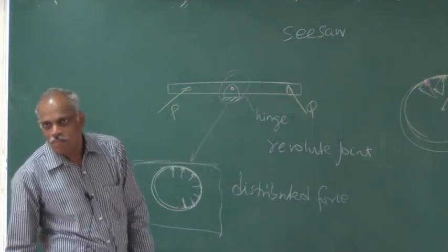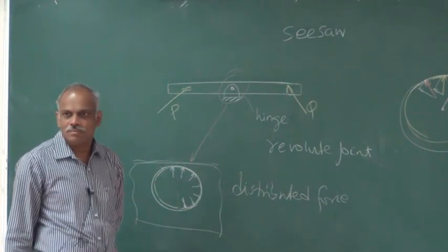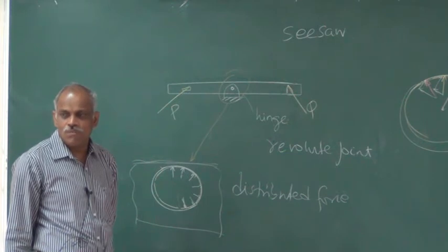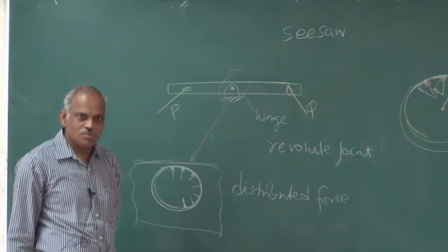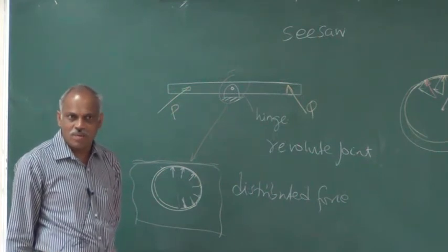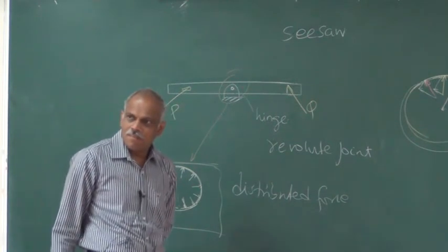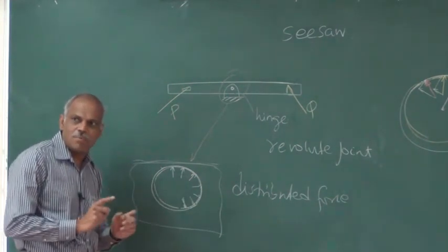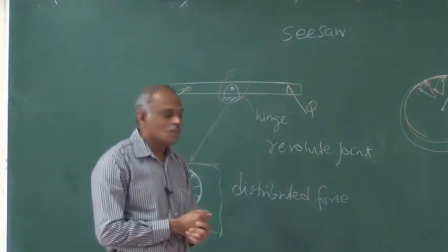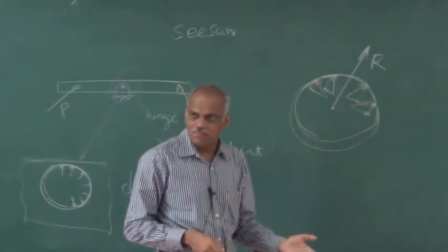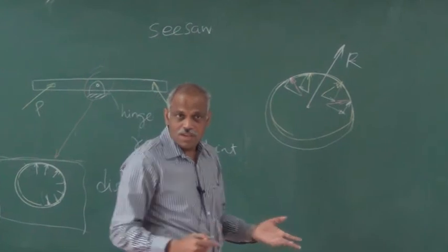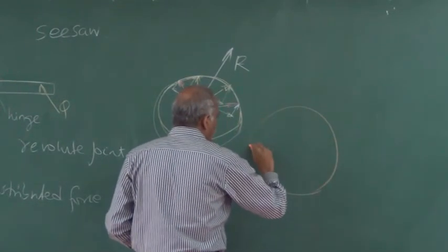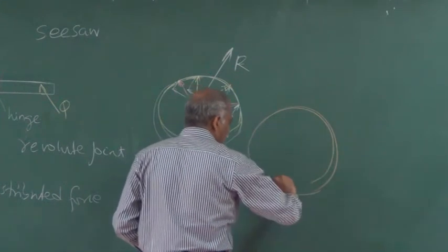Whenever you have a hinged joint, it can give you a single force passing through the center. But what is the direction of that force? In what direction is the hinge capable of providing a reaction? It is capable of giving the reaction in all directions — any direction possible.